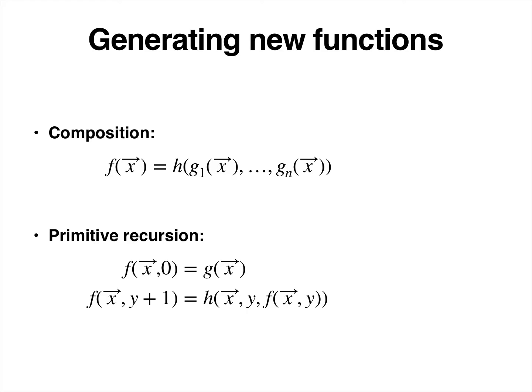Now that we have fixed the basic functions, we can look at how to generate new functions from them. We will consider two operations. The first one is composition: we can build a new function f by composing h with a collection of functions g_i.